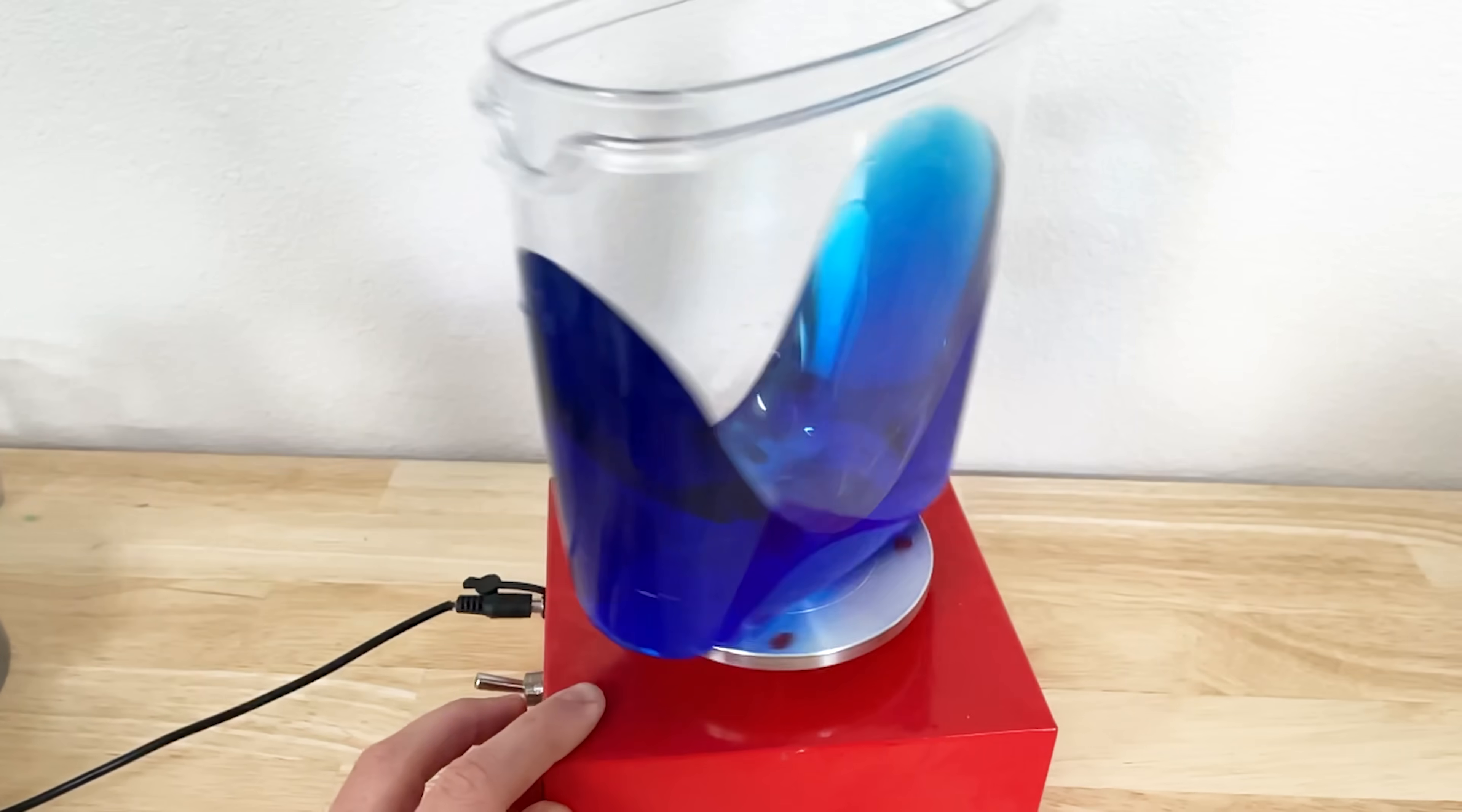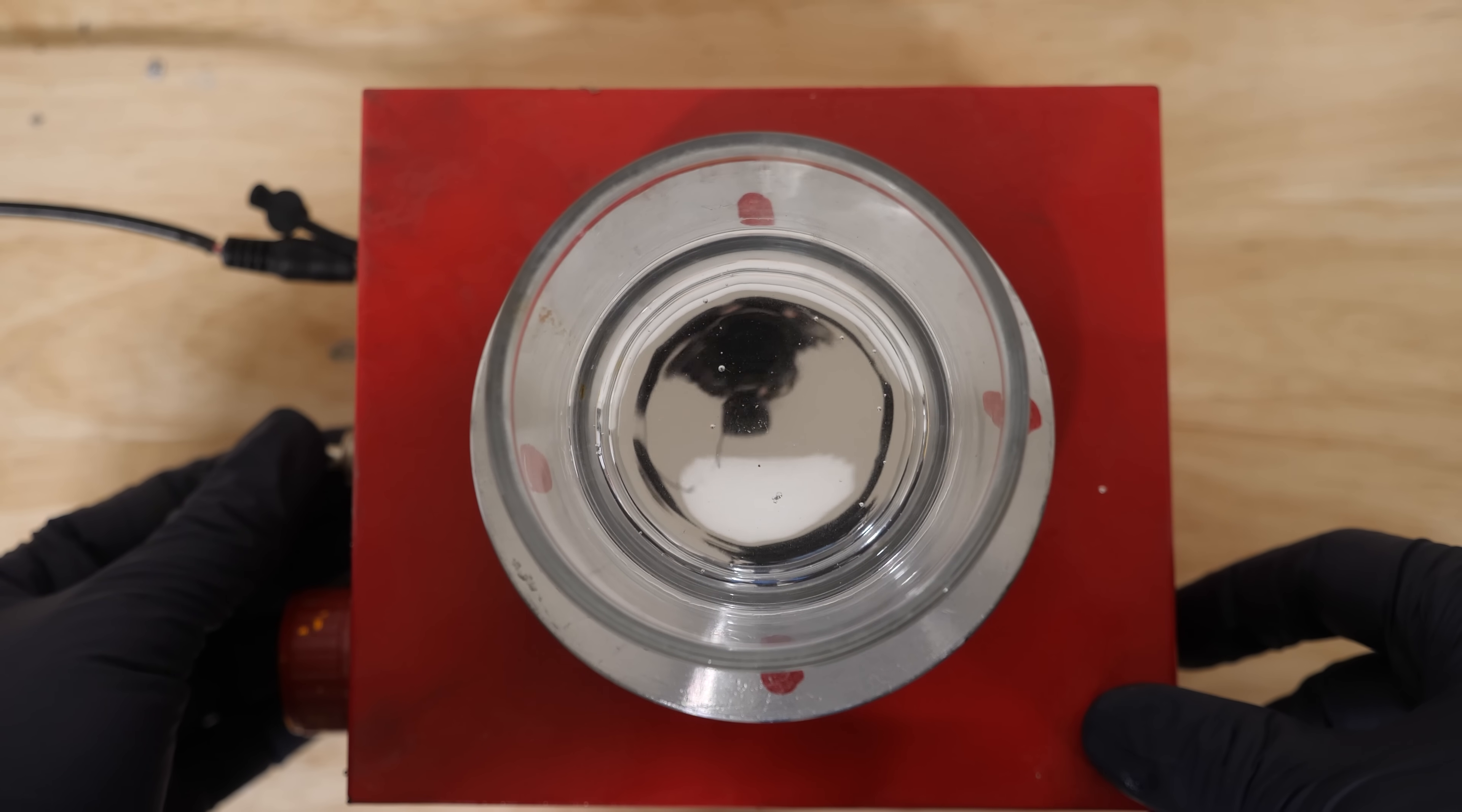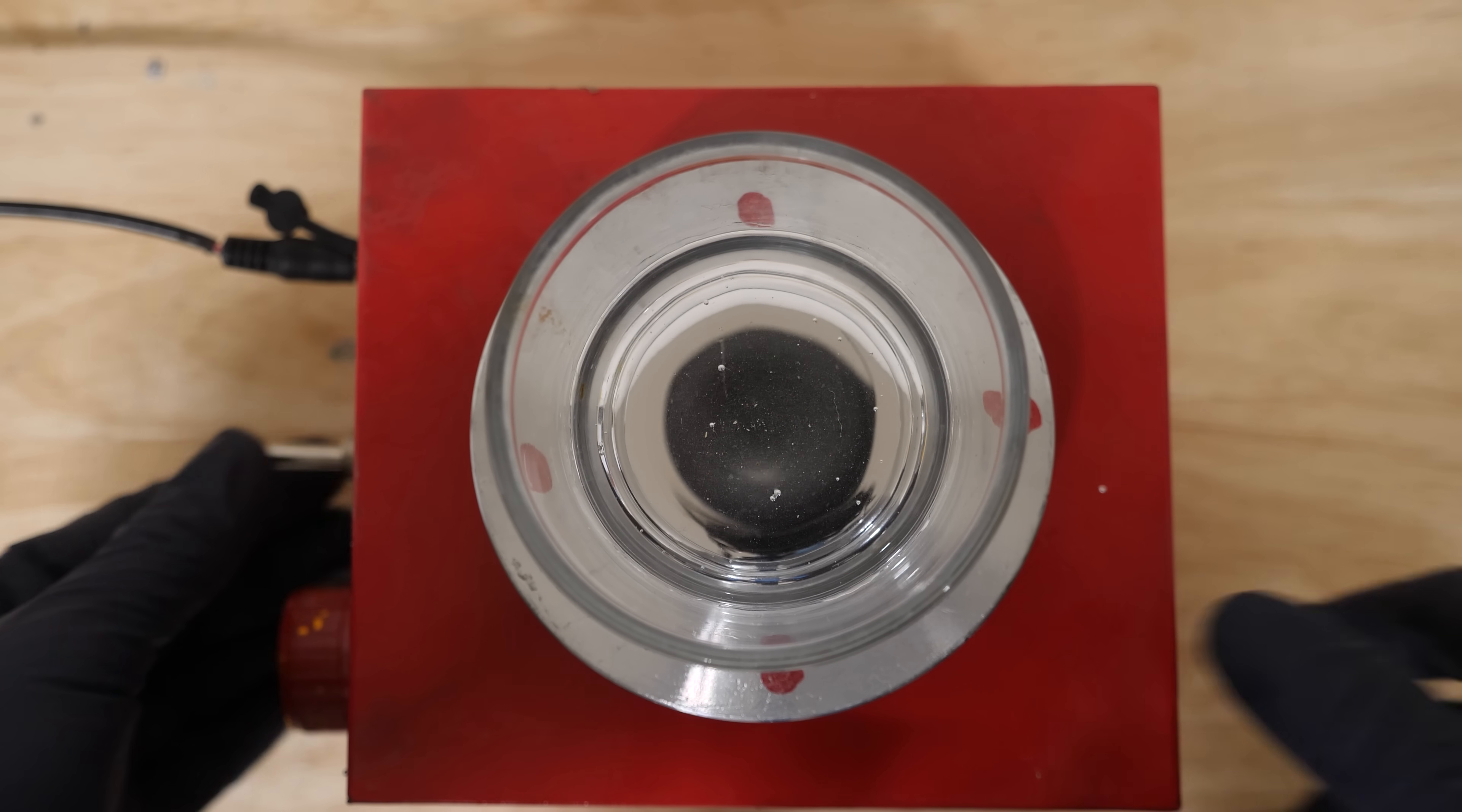So we know how to make a perfect parabola. Now we just need some reflective liquid metal. Some mercury would work great for this, but let's try something a little less toxic like gallium.